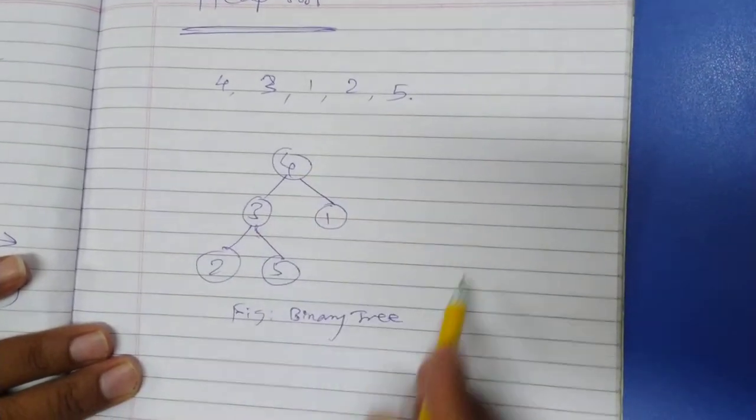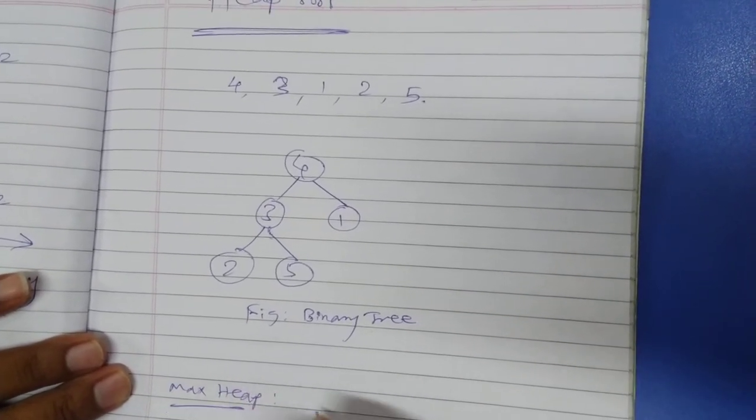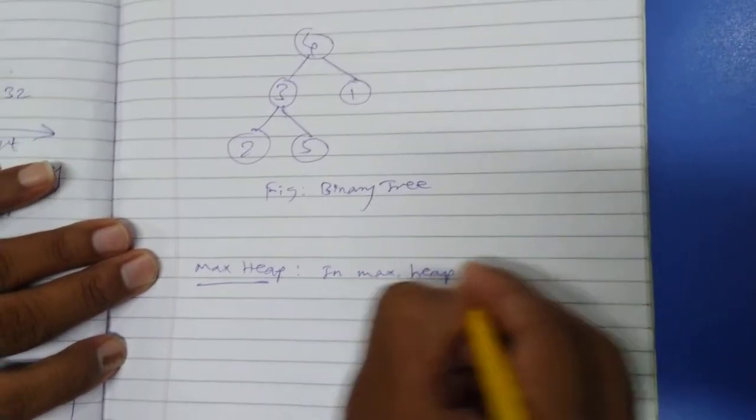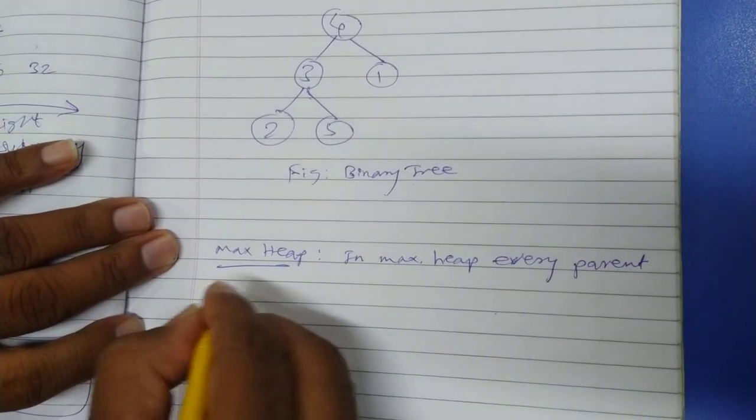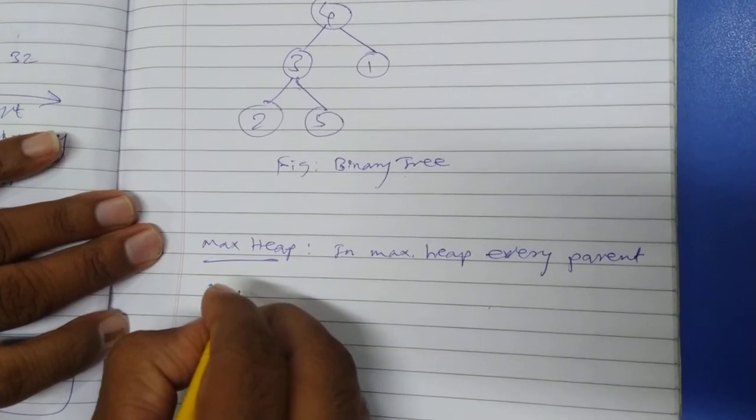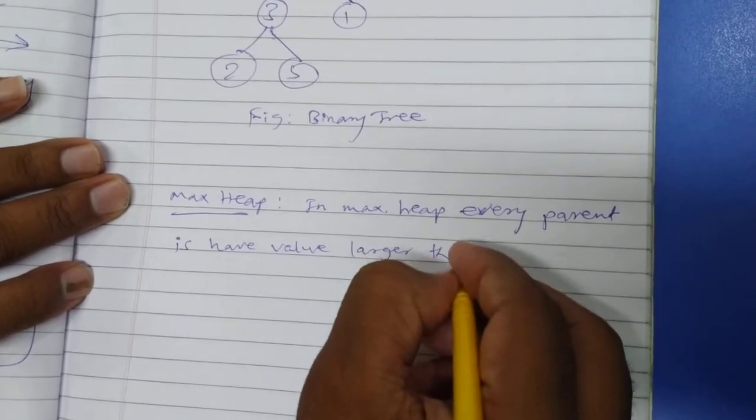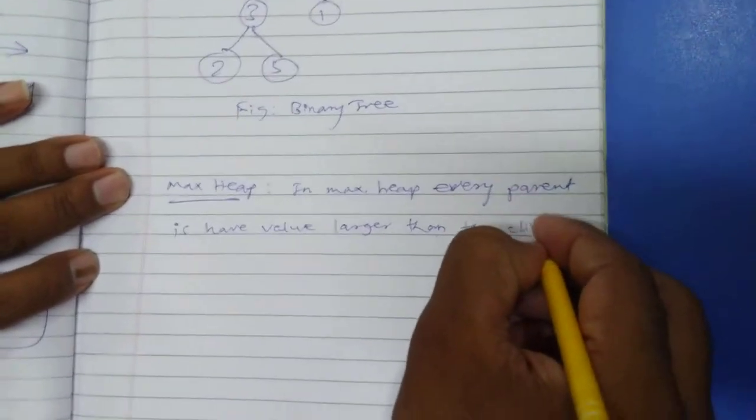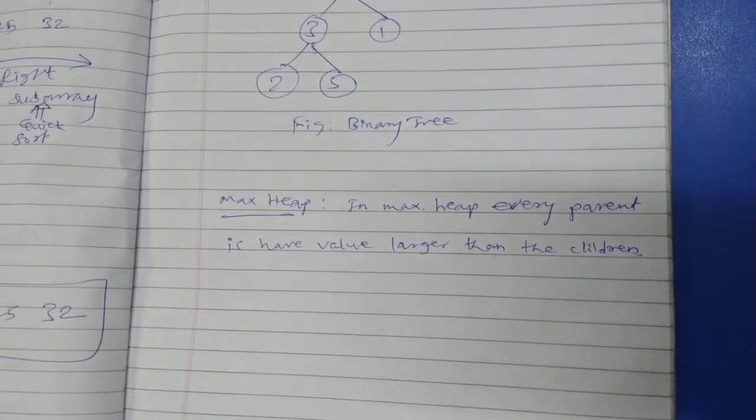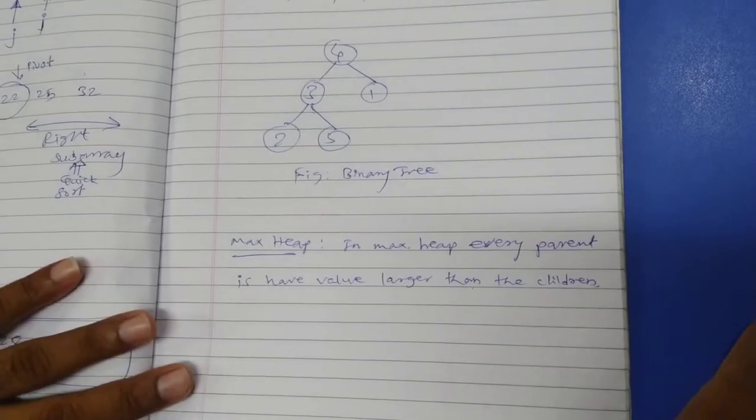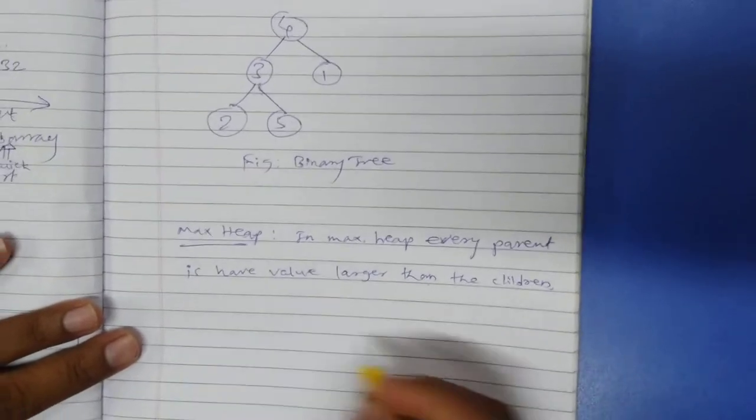Now, our job is to convert this binary tree into MaxHeap. Now what is MaxHeap? In MaxHeap, every parent has a value greater than the children. No matter the children are placed in any order, right? But the parent should have value greater than the children.